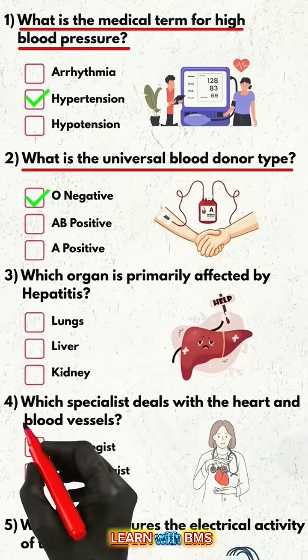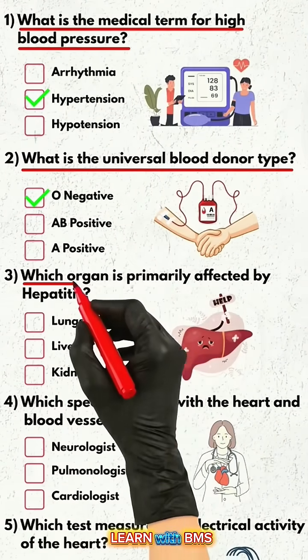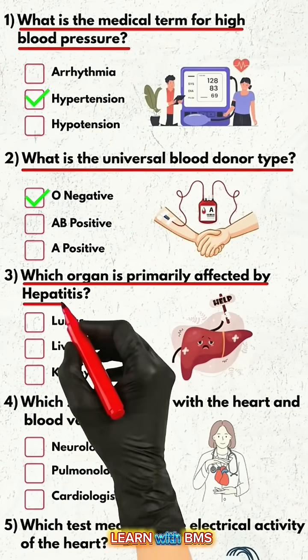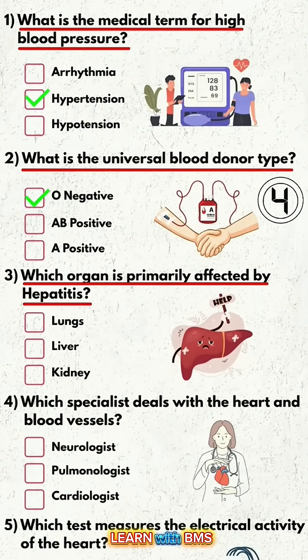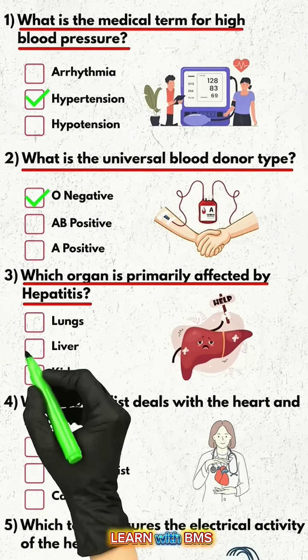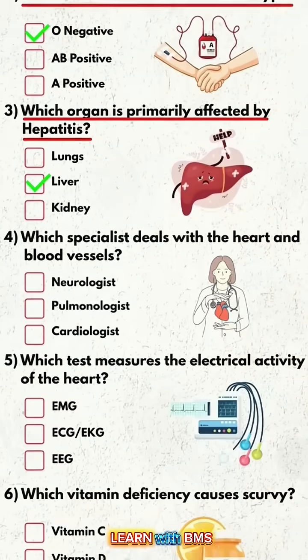Question 3: Which organ is primarily affected by hepatitis? The correct answer is the liver.